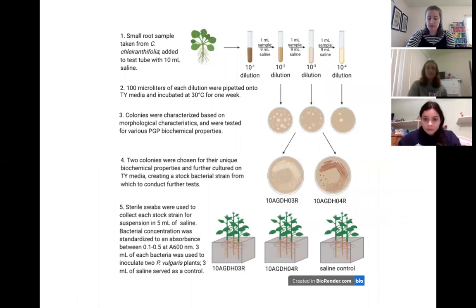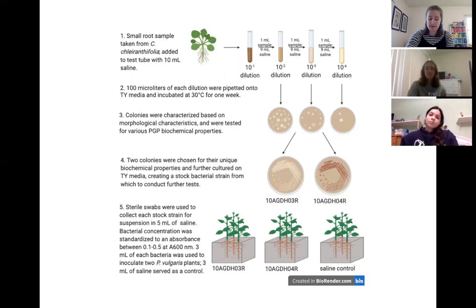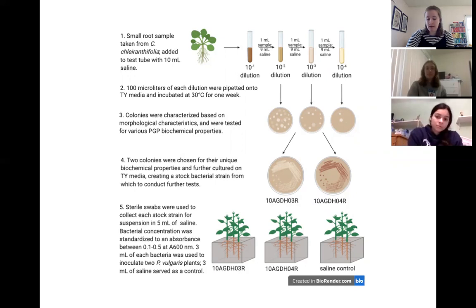We took a small root sample from C. carinthifolia, dislodged rhizospheric bacteria from the root, and performed serial dilutions to bring the amount of bacteria to a manageable level for study. From these dilutions, we identified several bacteria to test for certain biochemical properties, like phosphate solubilization, nitrogen fixation, and exopolysaccharide production. Based on the results of these tests, we selected two isolates, 10-AG-DH-O3R and 10-AG-DH-O4R, for further culturing.